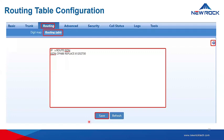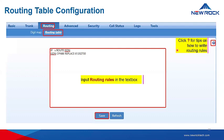Next is the routing table configuration. There is a guide on how to write routing rules, and you can input the routing rules in the text box. We support 500 rules. There are two functions: digit transformation and call routing. The first example indicates that a call from any calling party number with any number is sent to the IP network via the ISDN network interface — with source, number, route, and destination.